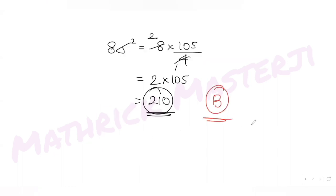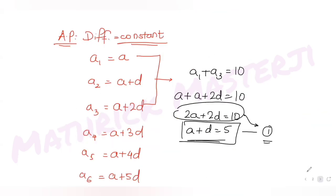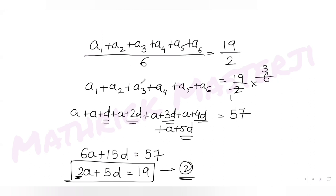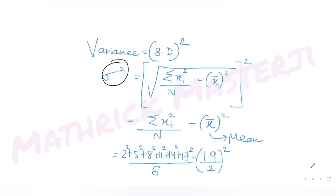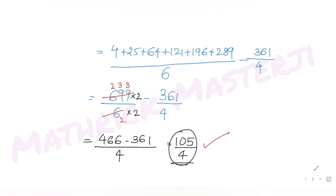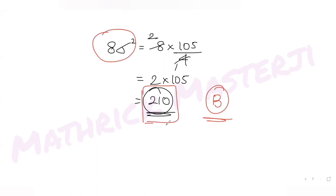I hope you understood how to solve this type of question. We used the concept of arithmetic progression, applied the condition that the sum of the first and third terms is 10, and used the mean of 19/2 to get two equations in a and d. Solving them gave us the AP from 2 to 17. We then applied the variance formula — summation of xi squared over n minus x-bar squared — getting 105/4, and multiplied by 8 to get 210.